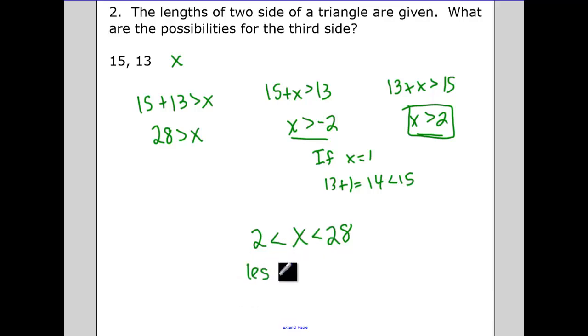So two is less than x is less than twenty-eight. And we always do the smaller one less than x and then another less than symbol, the larger of the two. That's the right way to write that inequality.